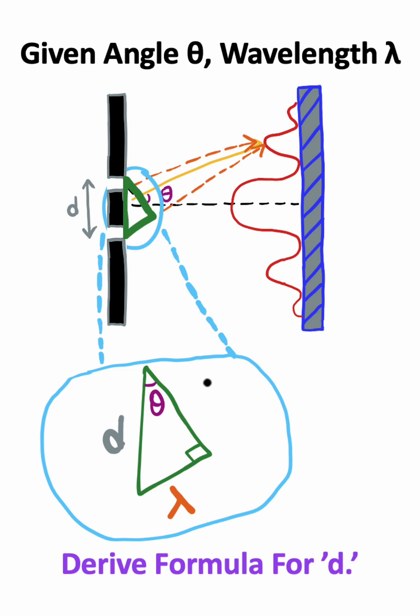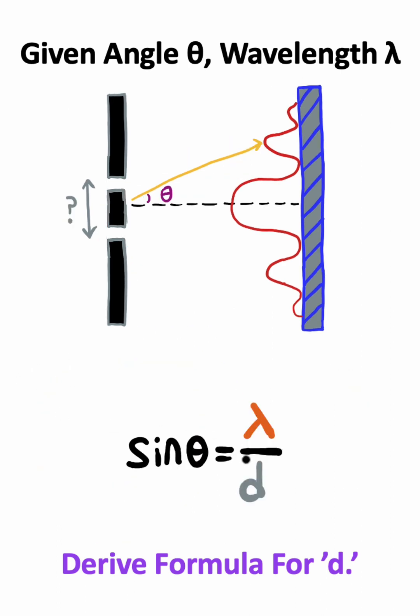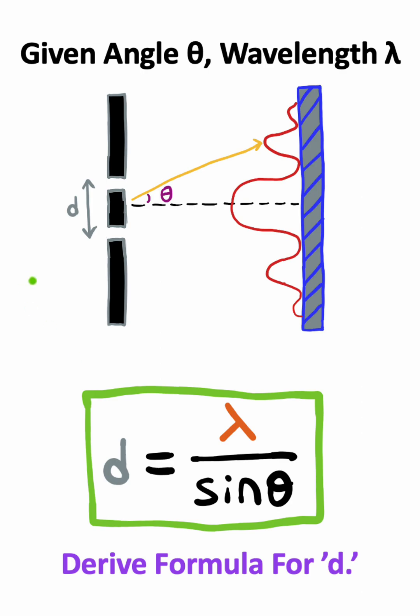Trigonometry teaches us for right triangles that the sine function is equal to the opposite side of the triangle divided by the hypotenuse. So we end up getting that sine theta is wavelength over distance. And using some quick algebra, I can swap sine theta and d to get a final equation for the distance between the two slits.